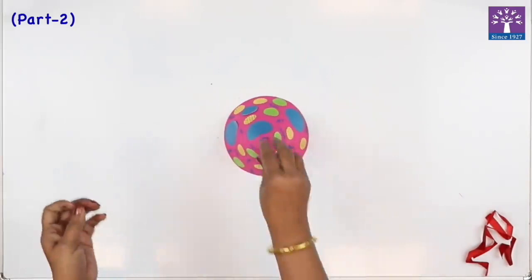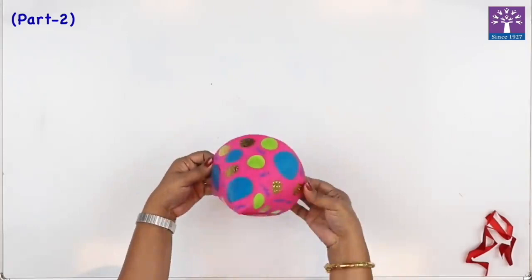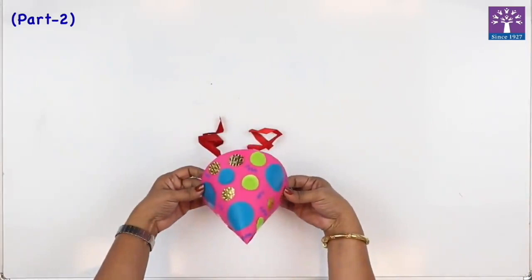Our party hat is ready, but if you just place it on your head it will fall off. So what we are going to do is use these two ribbons. We'll punch two holes here at two sides.